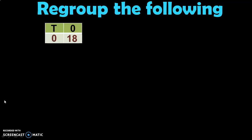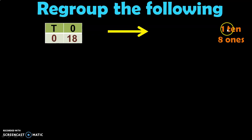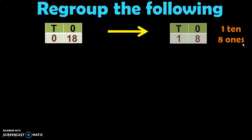Let us regroup the following. You have 0 Tens and 18 Ones. This can be regrouped as 1 Ten and 8 Ones. In the place value chart, you will have 1 Ten and 8 Ones, which makes 18.